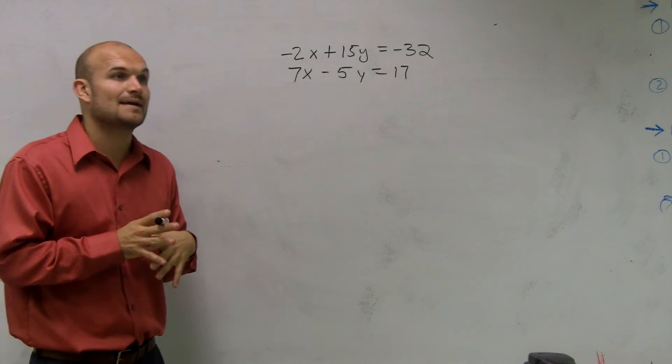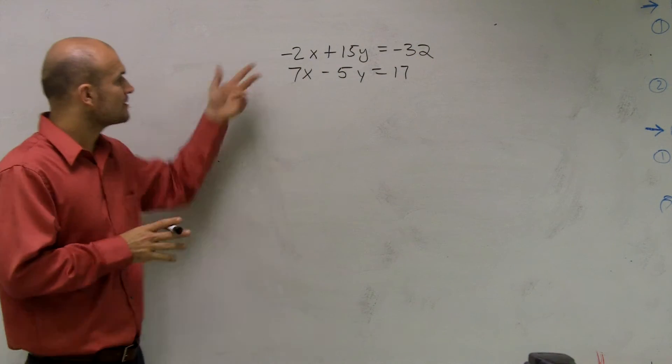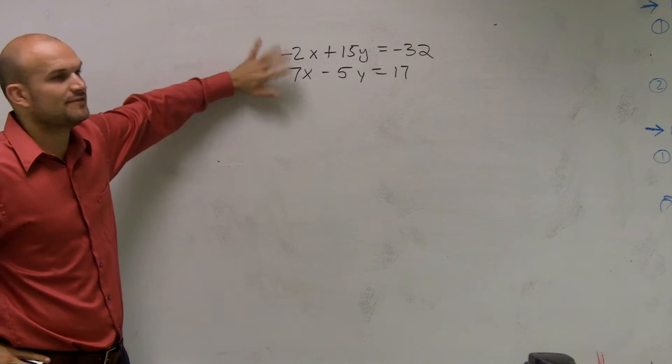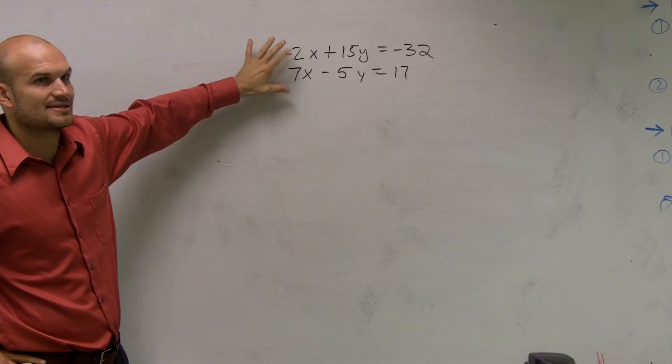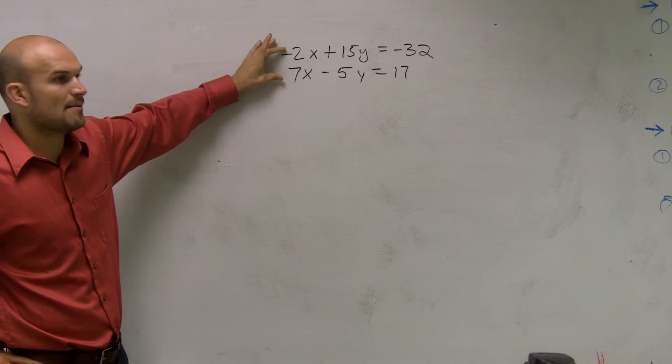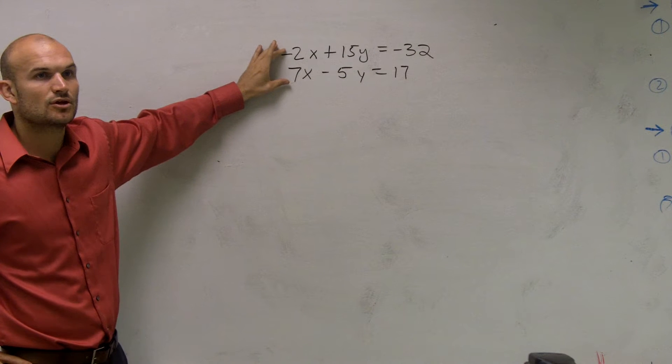So if you don't have the same, look for the least common multiple. Between, forget about the signs. I don't care about the signs right now. But the least common multiple between 2 and 7 is 14, right?